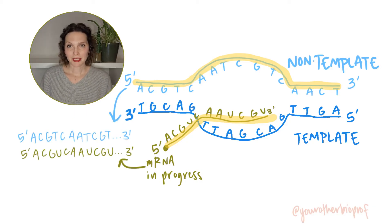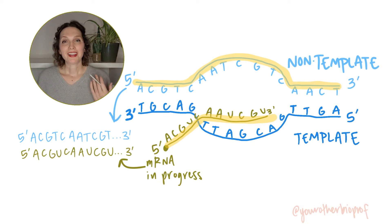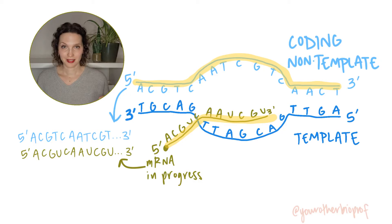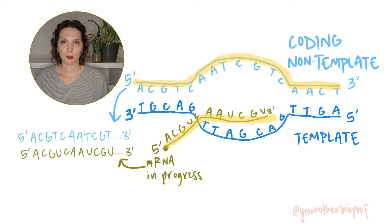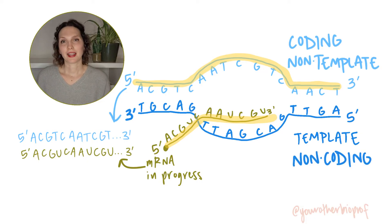Because the non-template DNA strand and the RNA have the same sequence — except for T's and U's — we call the non-template DNA strand the coding strand. It has the same code as the RNA that will be produced. And because the template strand of DNA is complementary to the RNA that will be produced, we call it the non-coding strand.